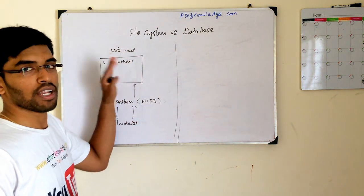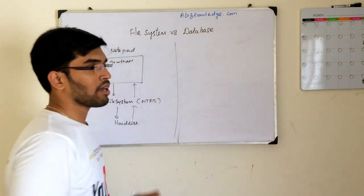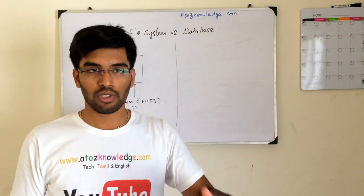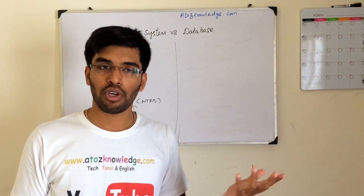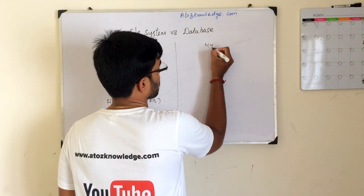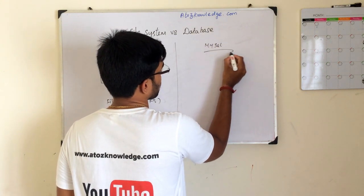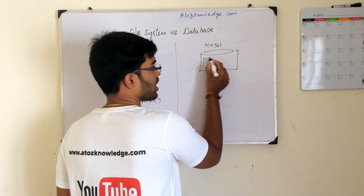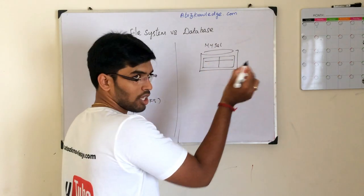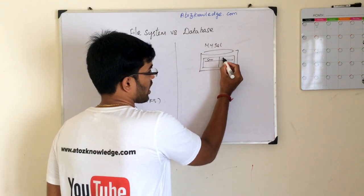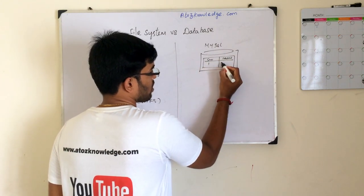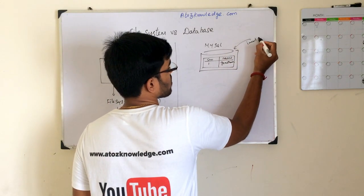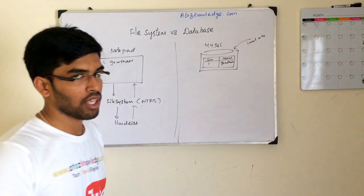Now let's go to a database. I'm going to install MySQL on top of my Windows machine, because you need to install a database on top of your OS. I'm installing MySQL, and in this database I'm creating a table. The table has two columns: serial number and name. I do an INSERT INTO query with values '1, Gautam'.